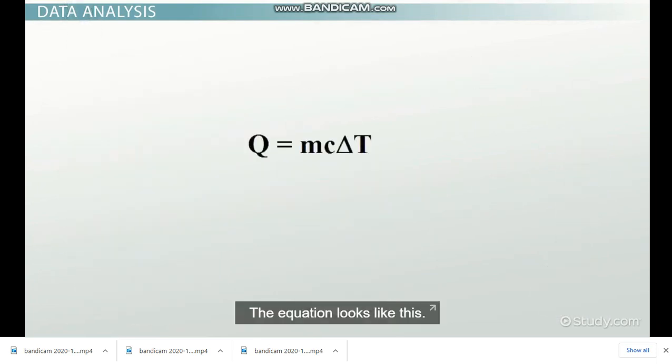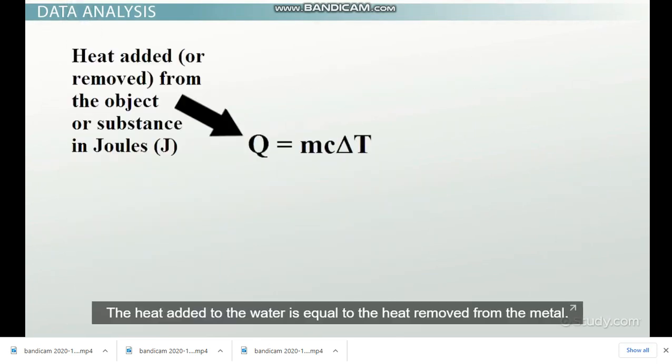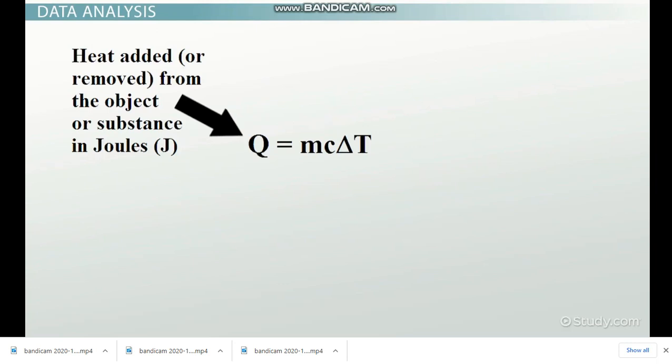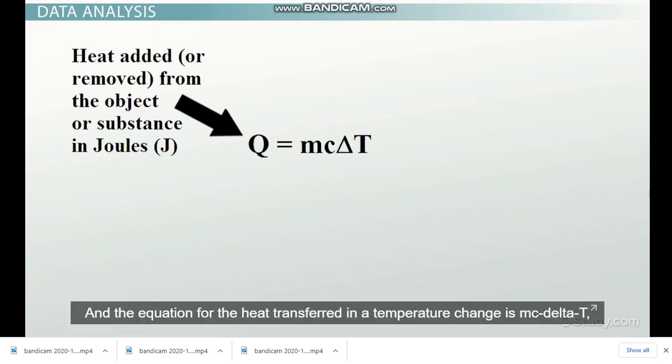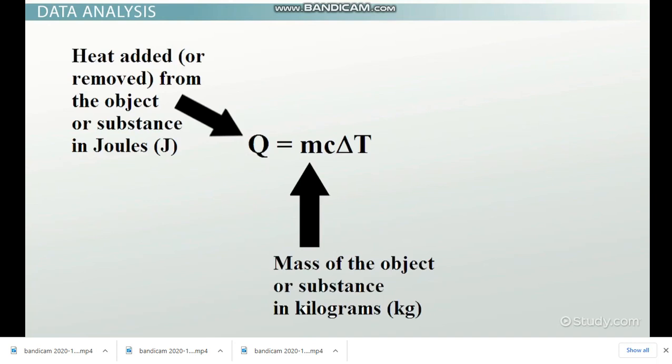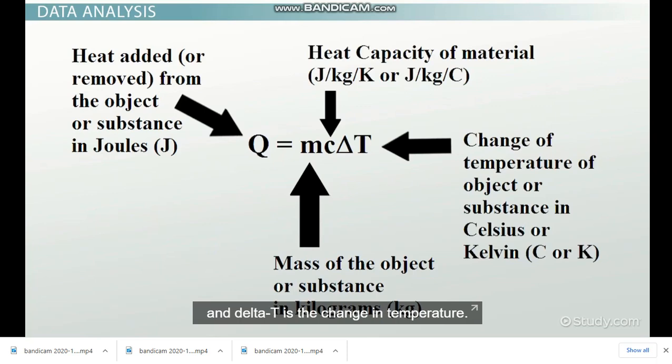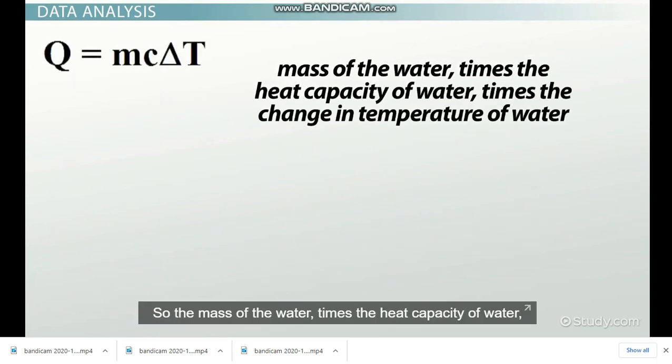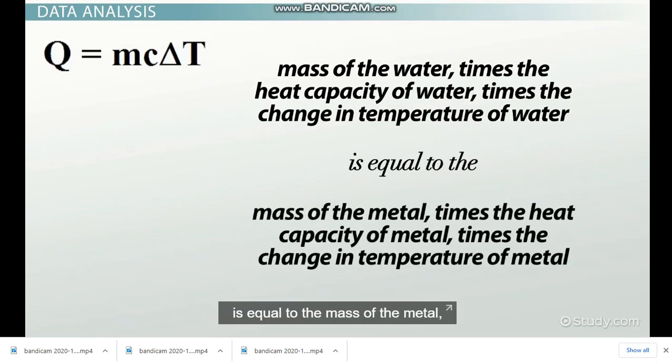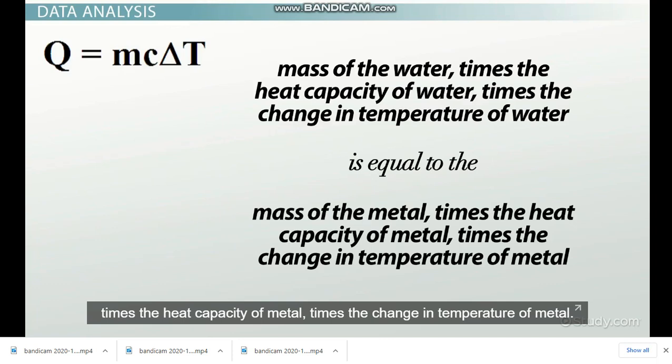The equation looks like this: The heat added to the water is equal to the heat removed by the metal. And the equation for the heat transferred in a temperature change is Q = mcΔT, where m is the mass of the substance, c is the heat capacity of the substance, and ΔT is the change in temperature. So the mass of the water times the heat capacity of the water times the change in temperature of the water is equal to the mass of the metal times the heat capacity of the metal times the change in temperature of the metal. It turns out we know most of these values from our experiment.